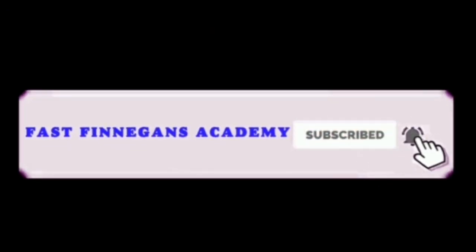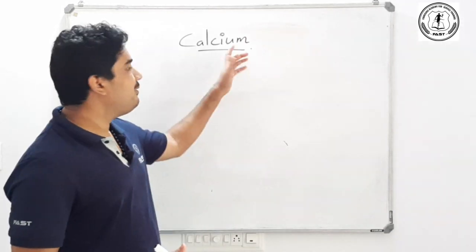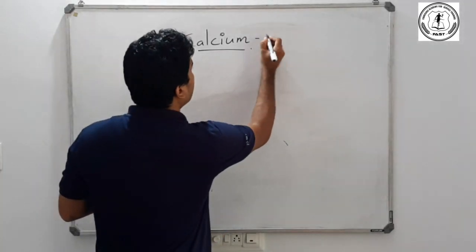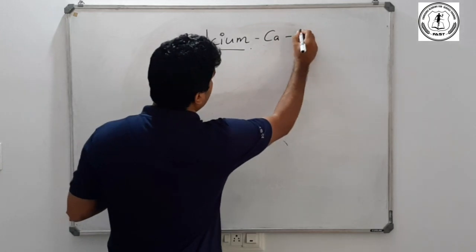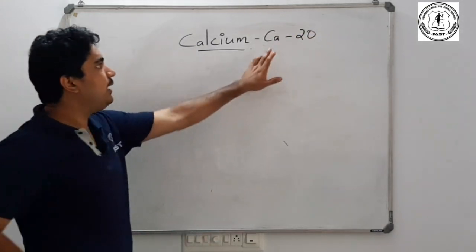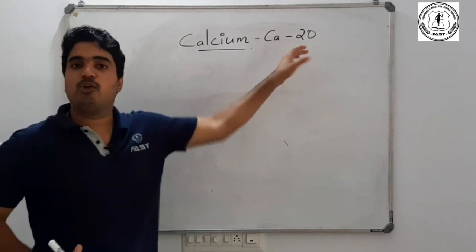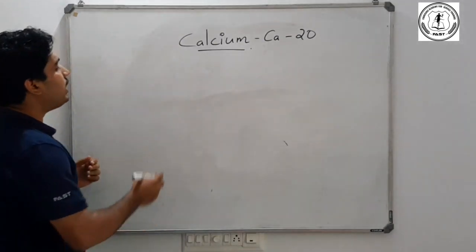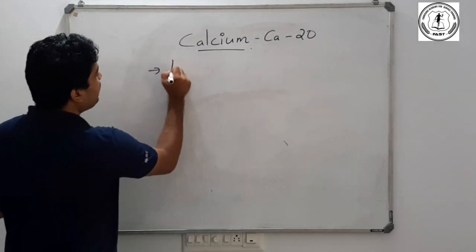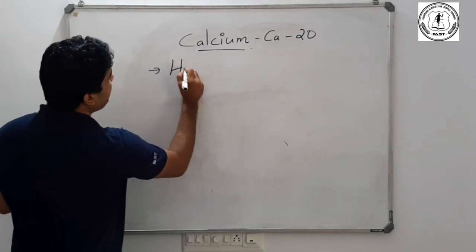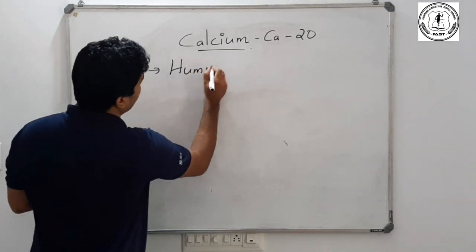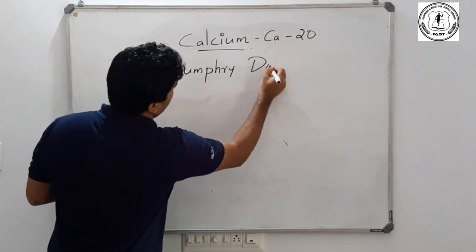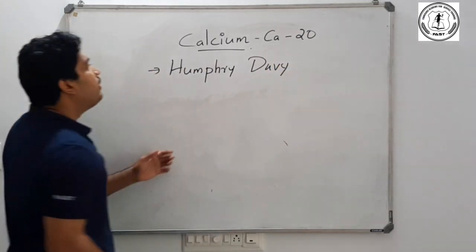We are going to start with calcium. The symbol of calcium is Ca and it has an atomic number. The discoverer of calcium is Humphry Davy.